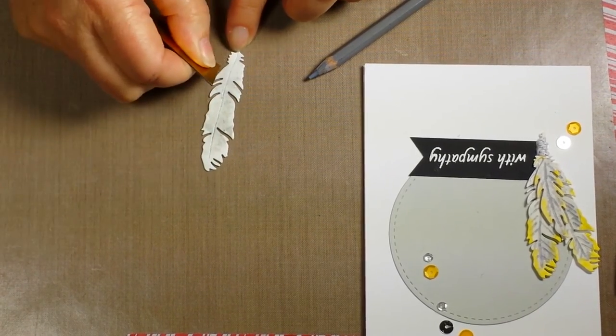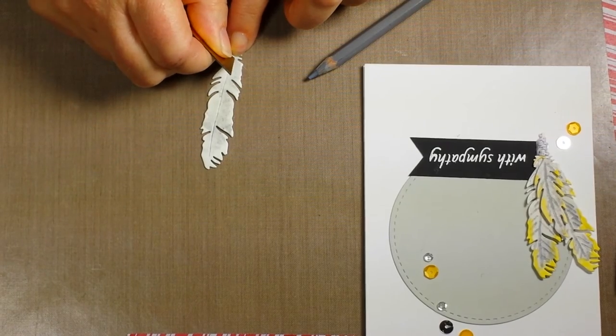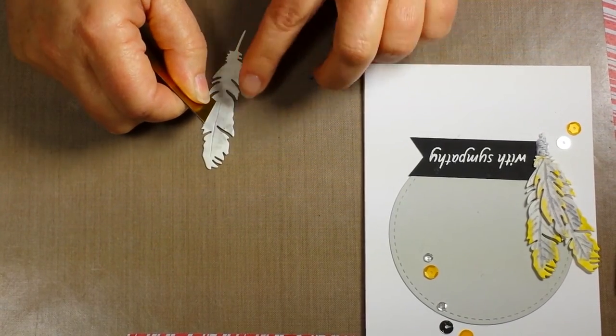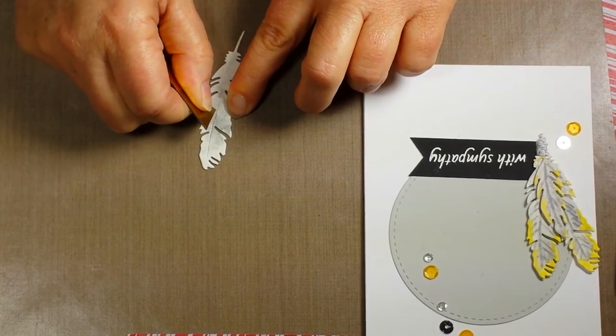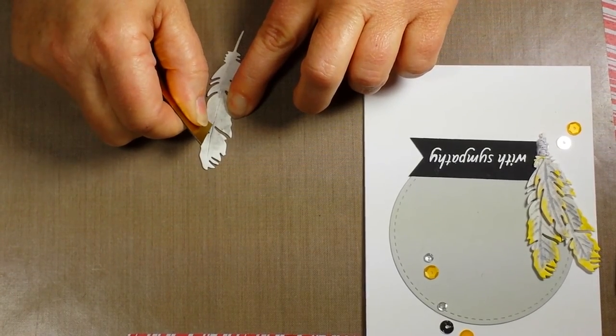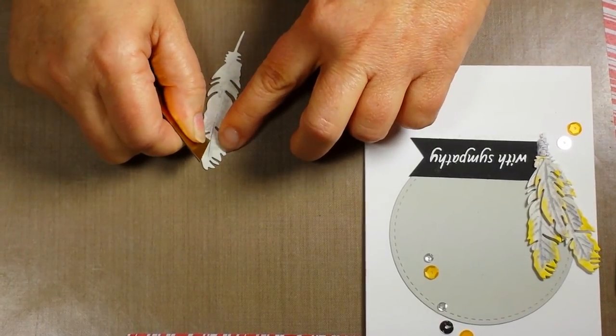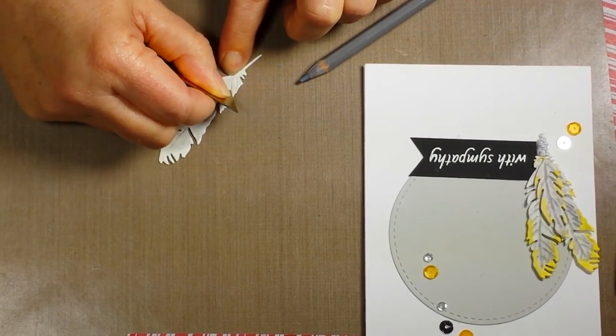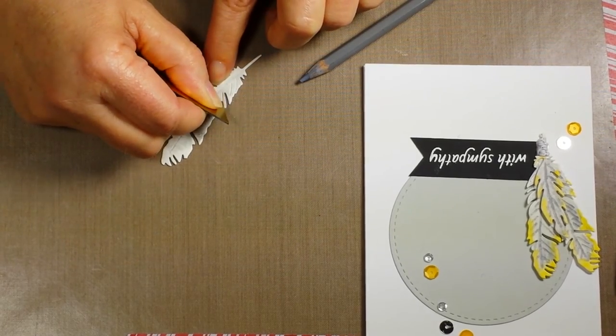You need to get the water soaked into the watercolor paper for this to work—you need to soften up those fibers. Alright, so scratching pretty deep.